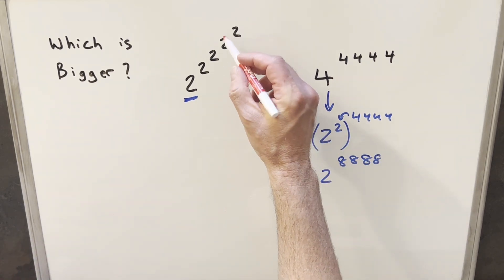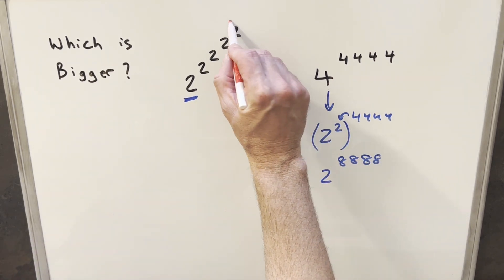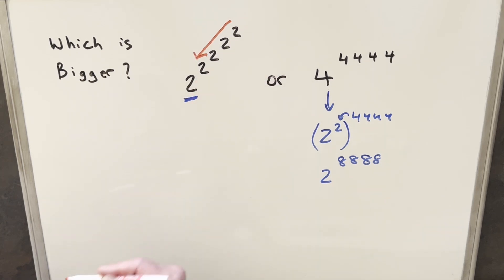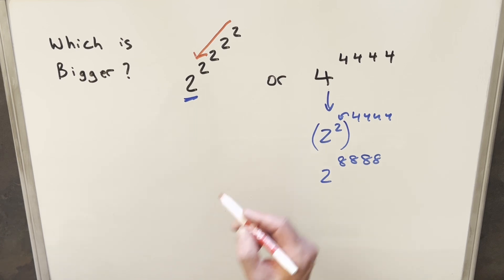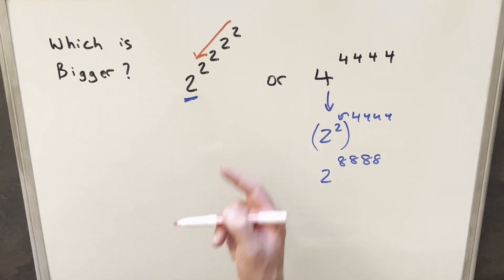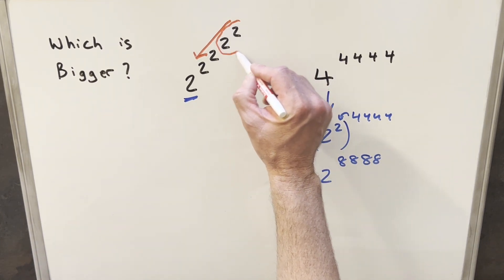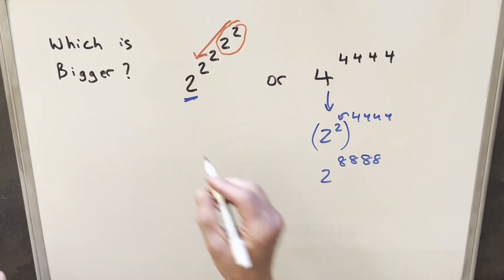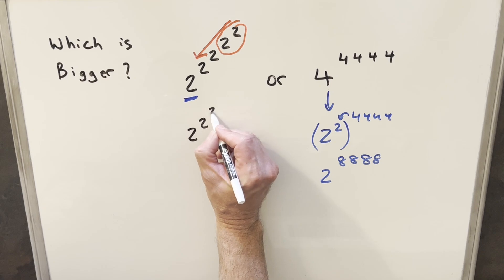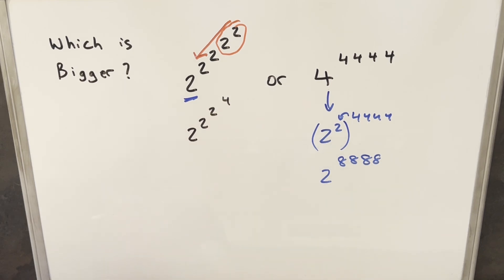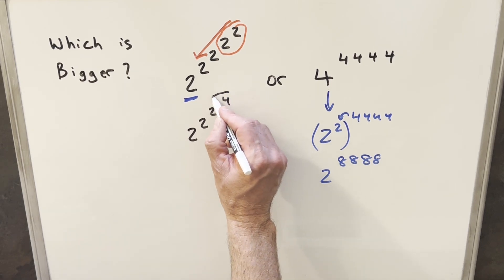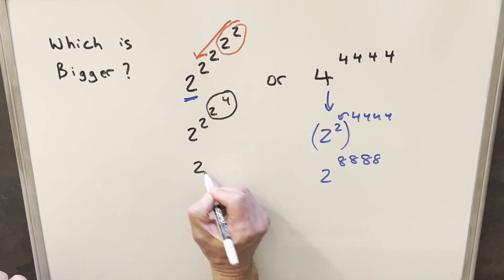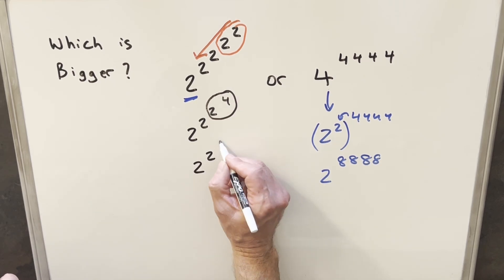Working with the left side, for an exponent tower like this, we need to work from top to bottom — going this way, not trying to work it from the bottom. We can do this one at a time. First, we can look at 2 squared here, and that's going to be the same as 4. So we rewrite this as 2 to the 2 to the 2 to the 4. Then focusing on the top again, 2 to the 4 is just 16, so we can write this as 2 to the 2 to the 16th.